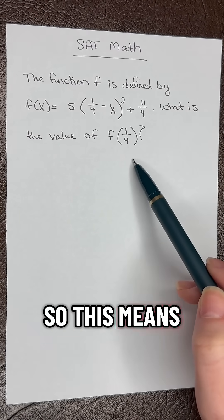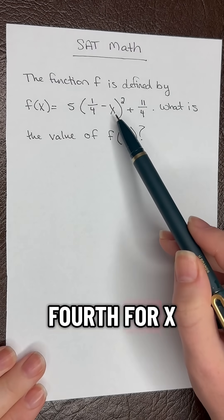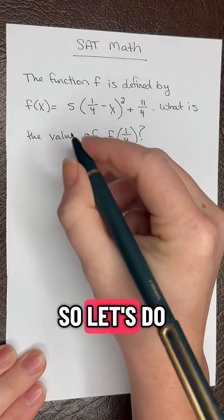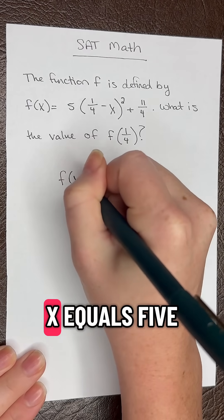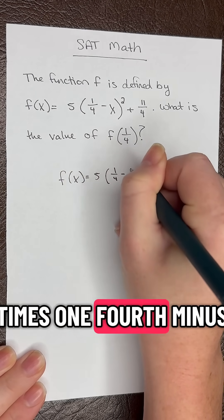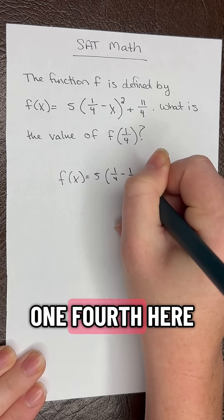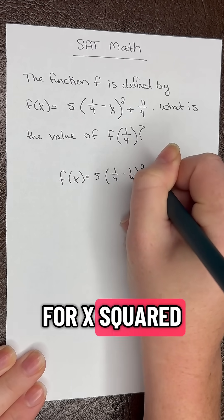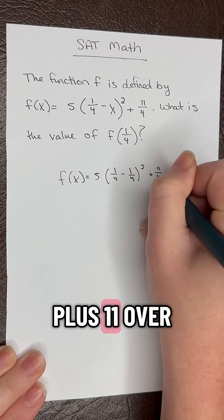So this means we need to plug in 1 fourth for x in this equation. Let's do that. We have f of x equals 5 times 1 fourth minus, we're plugging in 1 fourth here for x, squared plus 11 over 4.